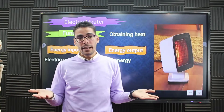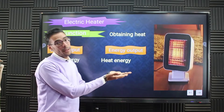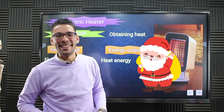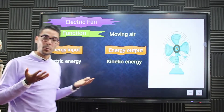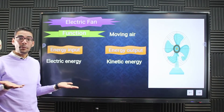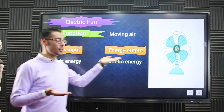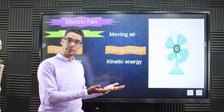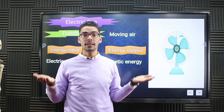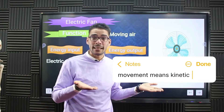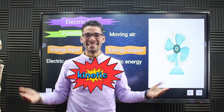The electric heater takes electric energy and converts it into heat energy to warm your body in winter. The electric fan is also an electric device, so the input energy is electric energy. The output energy from the fan is represented by movement, and movement means kinetic — so the output energy from the fan is kinetic energy.